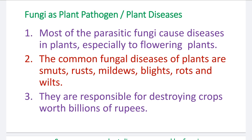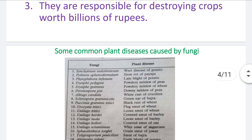Number two: the common fungal diseases of plants are smuts, rusts, mildews, blights, rots, and wilts. Apart from these five types, there are a variety of other fungal diseases occurring on plants. Number three: they are responsible for destroying crops worth billions of rupees. They can destroy crop plants and cause very significant economic loss.